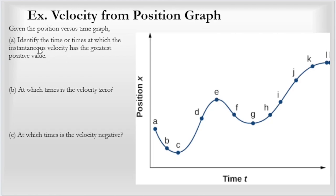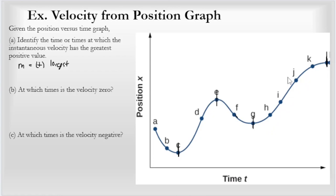The question asks: identify the time or times at which the instantaneous velocity has the greatest positive value. What we want is the greatest positive slope — the largest positive slope of the tangent line. Looking along the graph, the tangent line has a positive slope in one region, turns negative, then is negative again, and from G all the way up to L it has a positive slope. So we've isolated the regions where slope is positive: C to E and G to L.